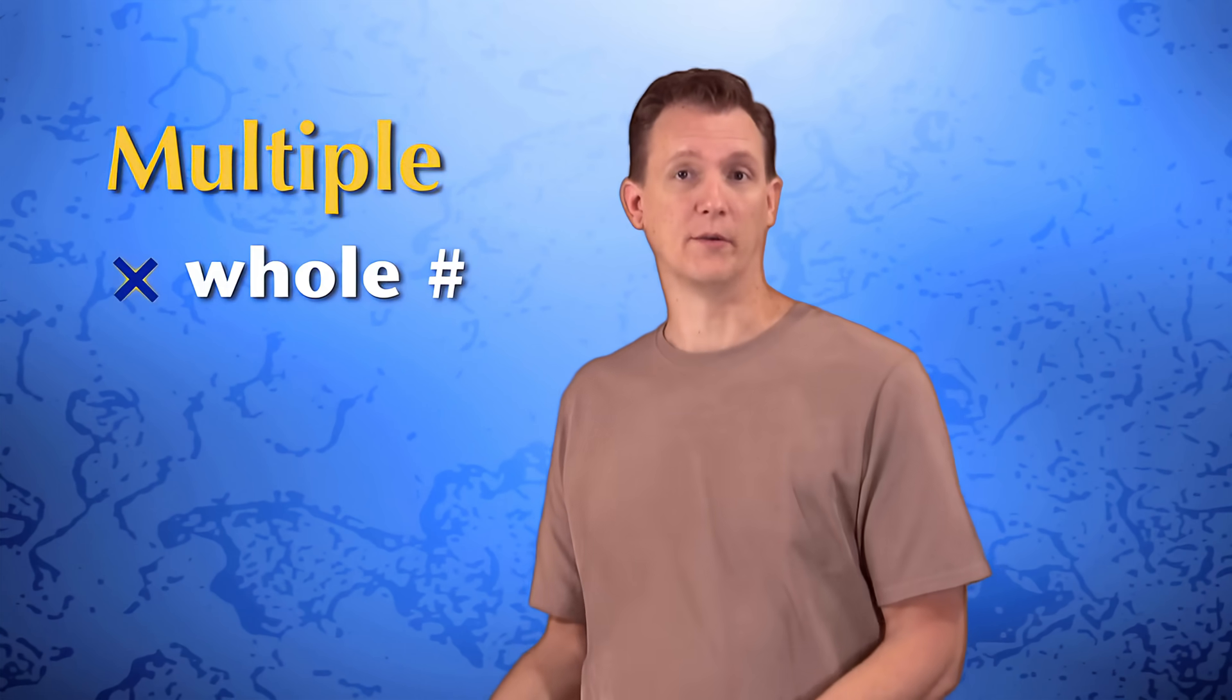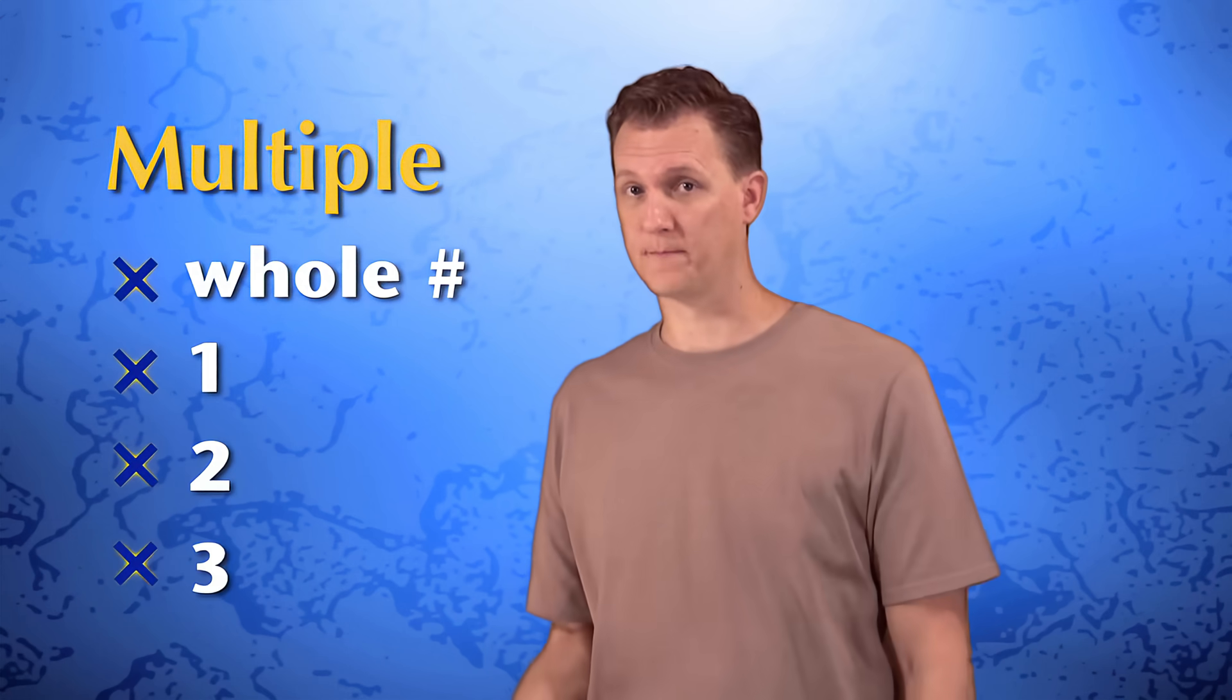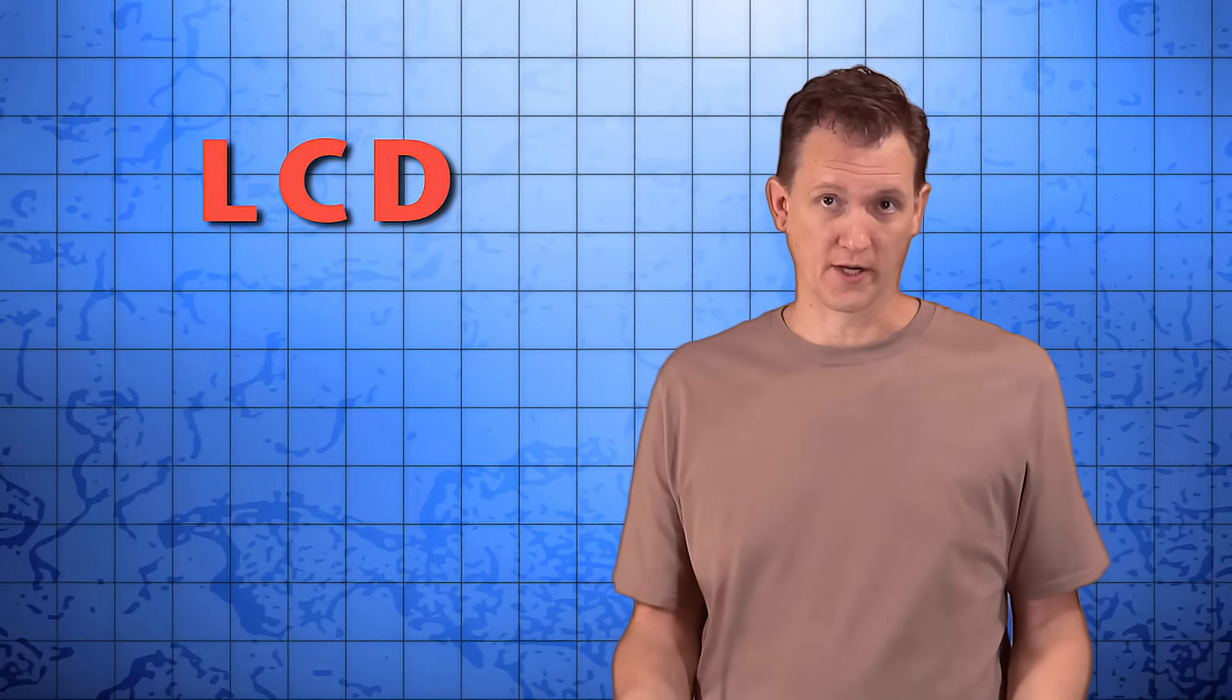Now in case you've forgotten, a multiple of a number is just the result of multiplying it by another whole number, like 1, 2, or 3. So here's what we're going to do to find the least common denominator, or LCD for short.